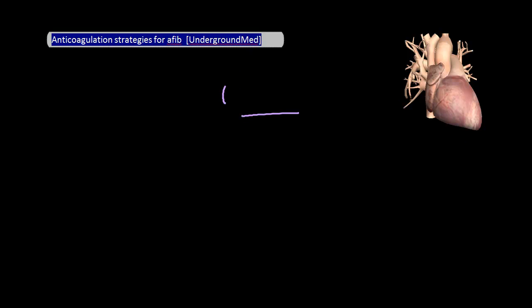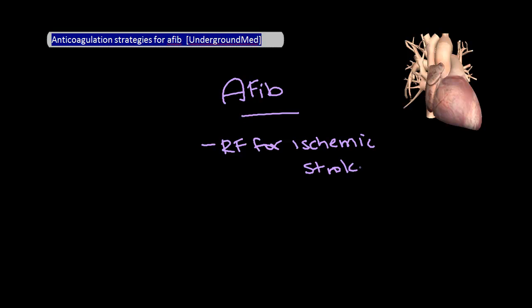This video will go over the main strategies you might see used in the clinic or on the wards for atrial fibrillation. We'll talk especially about the CHADS score, which you'll very likely come across on your medicine rotation. The main reason atrial fibrillation is of concern is that it is an independent risk factor for ischemic stroke. Compared to strokes not caused by AFib, strokes caused by AFib have increased morbidity and mortality, and being present in greater than 1% of the general population means you'll likely encounter it on the wards.